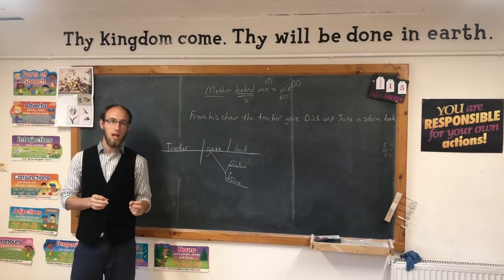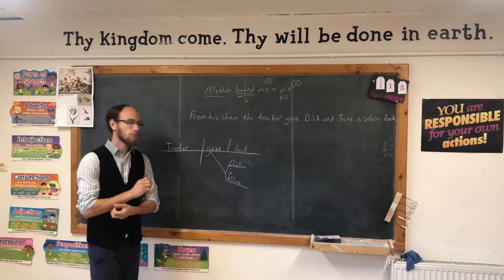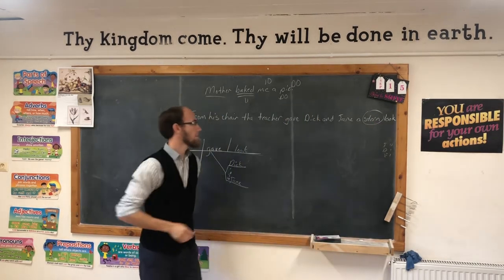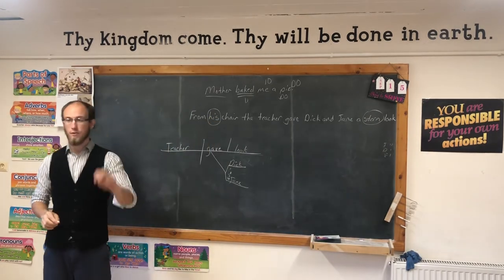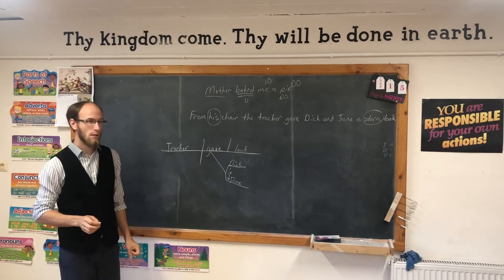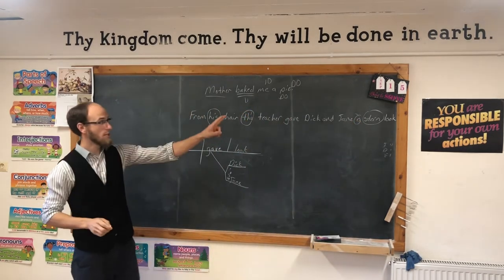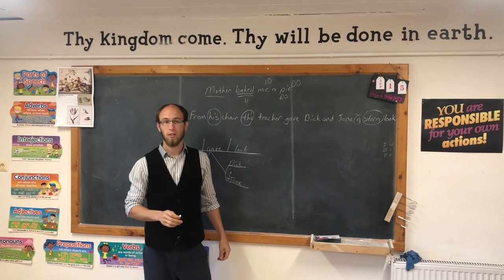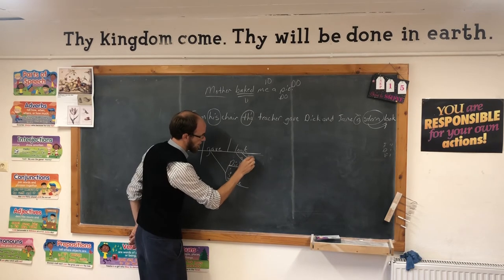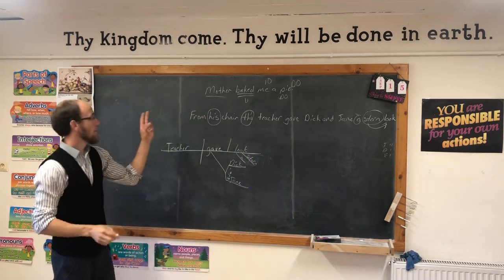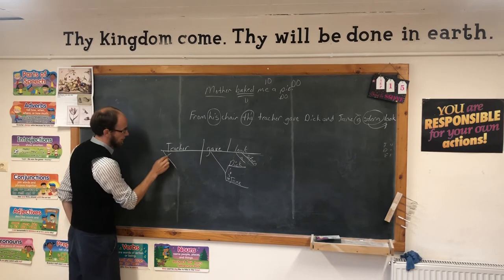Now let's find some adjectives from the sentence: 'From his chair, the teacher gave Dick and Jane a stern look.' Stern—good. His. And don't forget the articles: the and a. Always remember a and the. So 'a' and 'stern' modify look—we put them under look. And 'the' modifies teacher—we put it under teacher.